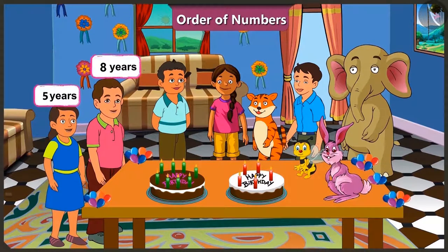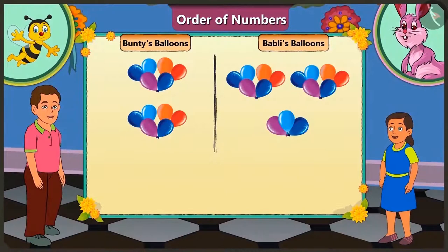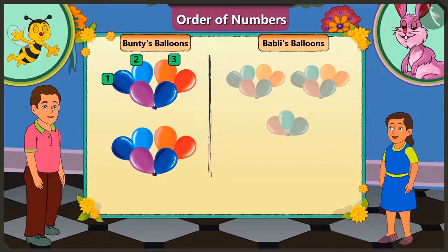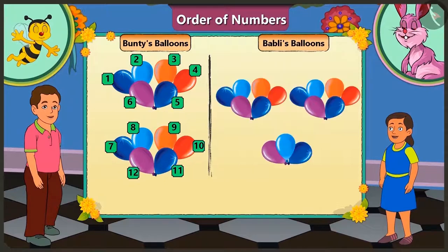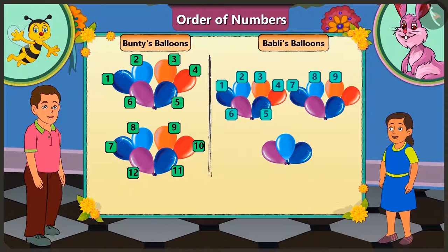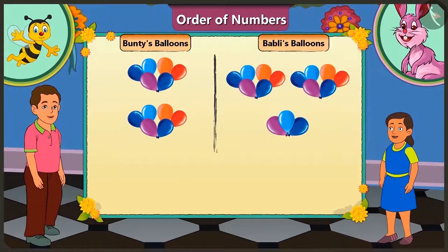Oh yes, you are right. Honey, can you tell me how many balloons do Bunty and Bubbly have with them? Bunty has 1, 2, 3, 4, 5, 6, 7, 8, 9, 10, 11 and 12 balloons. Now tell me, of Bunty and Bubbly, who has more balloons? Bunty has 12 balloons and Bubbly has 15 balloons.